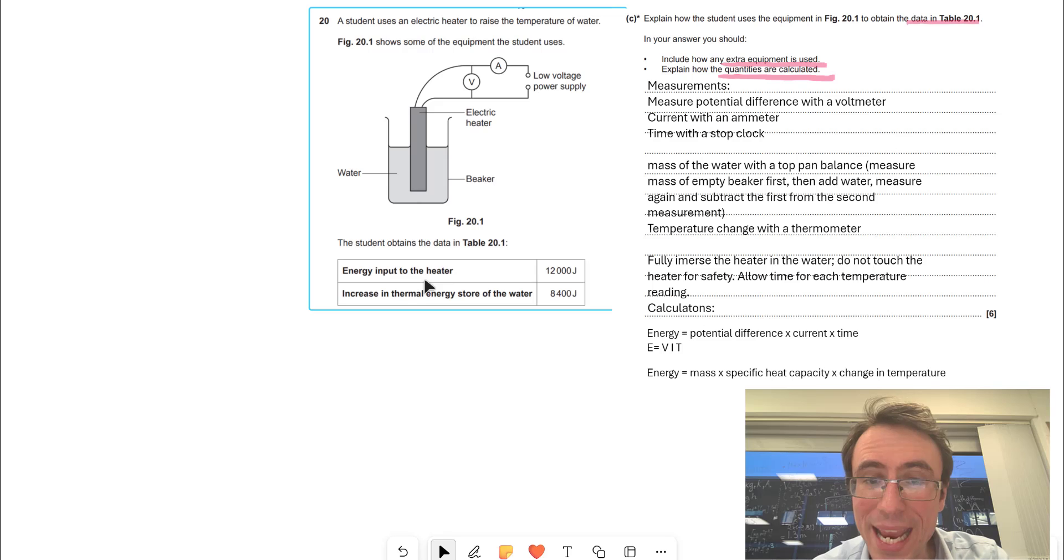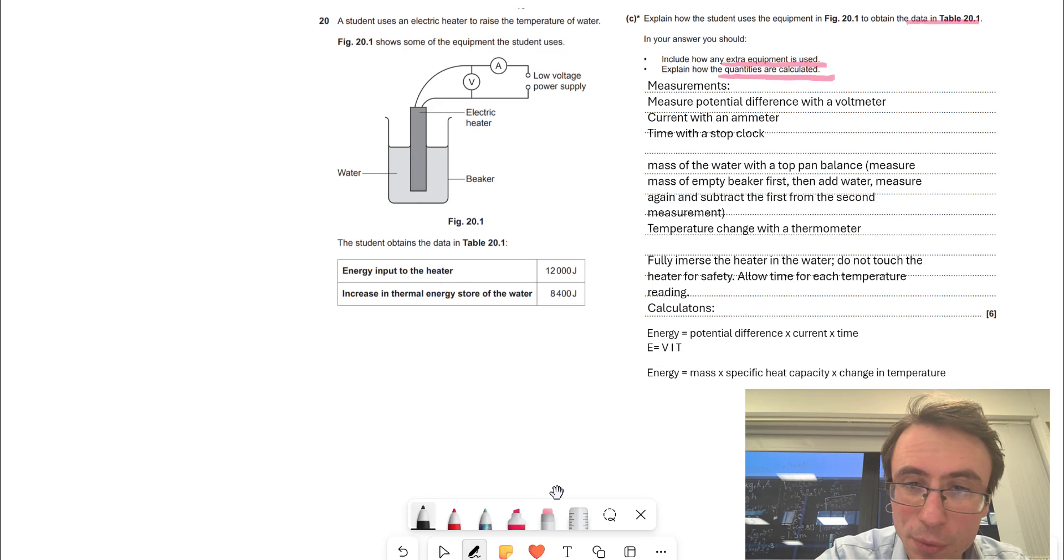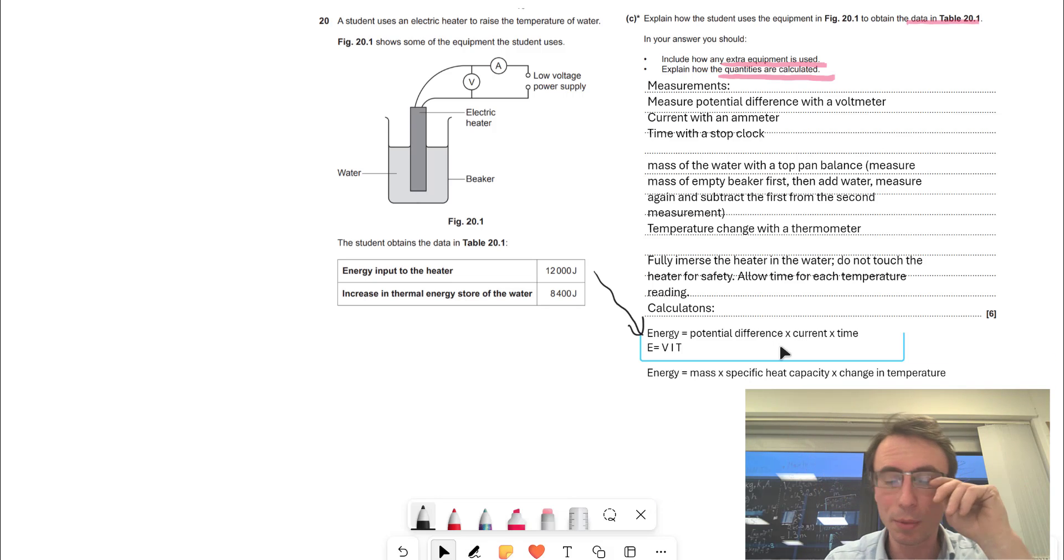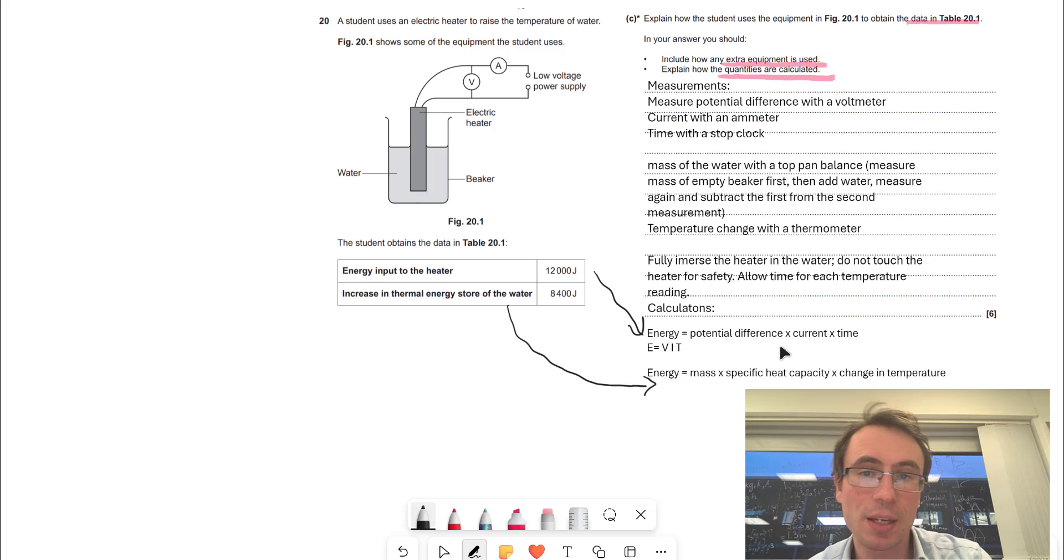For instance, the energy that's been inputted to the heater, which is this one here, will be calculated with the potential difference times the current multiplied by the time, and the thermal energy store of the water will be calculated using this equation.